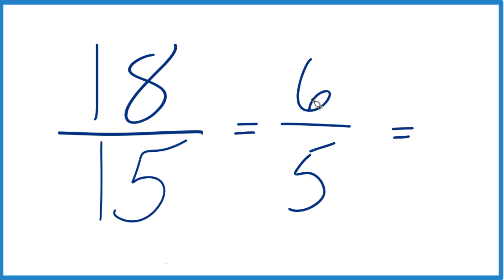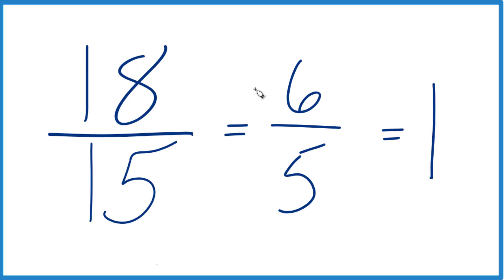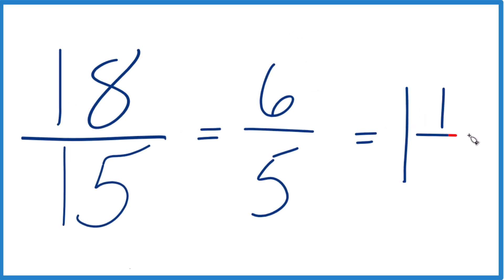5 goes into 6, 1 times 5 is 5, and then we'd have 1 left over. Bring that 5 across, and we get 1 and 1 fifth.